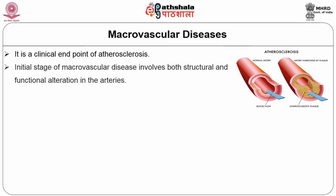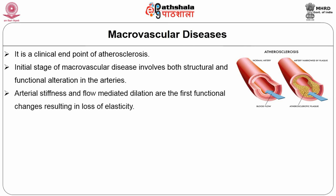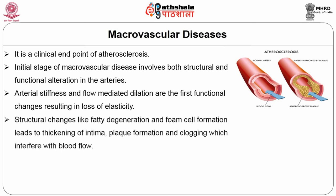Initial stages of macrovascular disease involve structural and functional alterations in arteries — arterial stiffness and impaired flow-mediated dilation are the first functional changes, resulting in loss of elasticity. Foam cell formation leads to intima thickening, then plaque formation and clogging that interferes with blood flow — like a clogged pipeline restricting water flow. Macrovascular disease is the most common cause of death in individuals with diabetes.